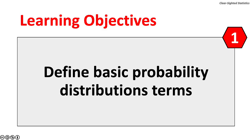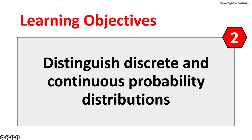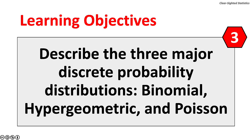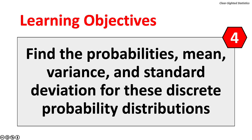There are four learning outcomes for this lecture. One, define basic probability distribution terms. Two, distinguish discrete and continuous probability distributions. Three, describe the three major discrete probability distributions: binomial, hypergeometric, and Poisson. Four, find the probabilities, mean, variance, and standard deviation for these discrete probability distributions.